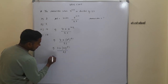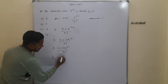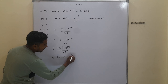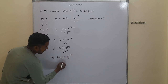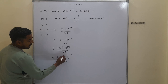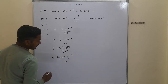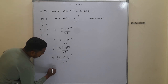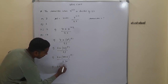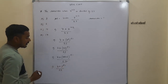We can write 49 as 46 plus 3, giving us 7 into (46 + 3) to the power of 51, upon 23. Since 46 is a multiple of 23, it cancels out with remainder 0. From here we get 7 into 3 to the power of 51, upon 23.